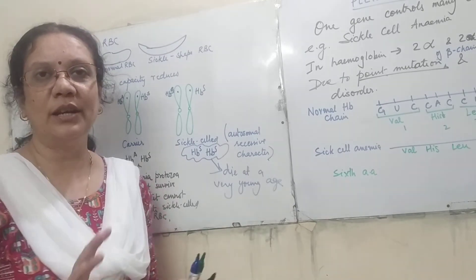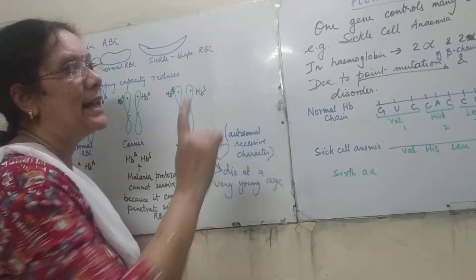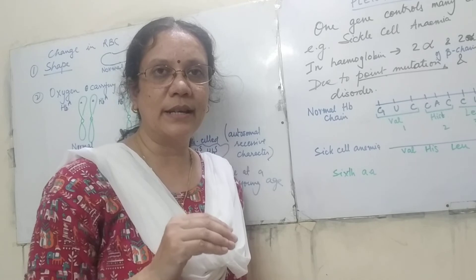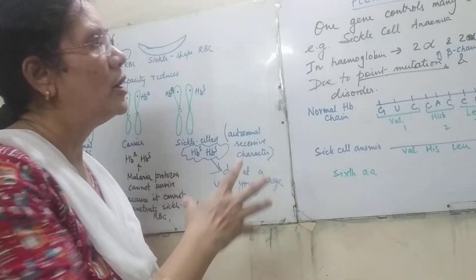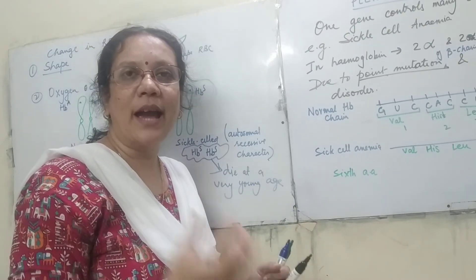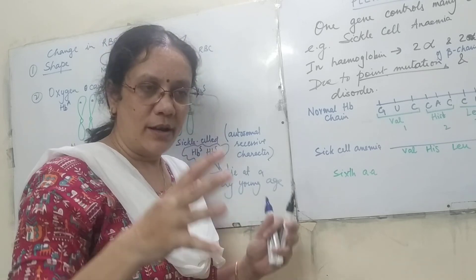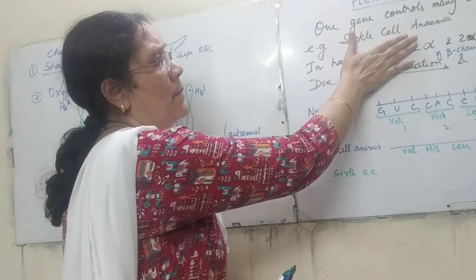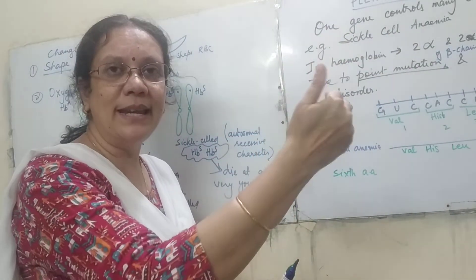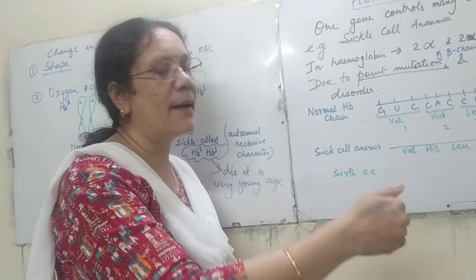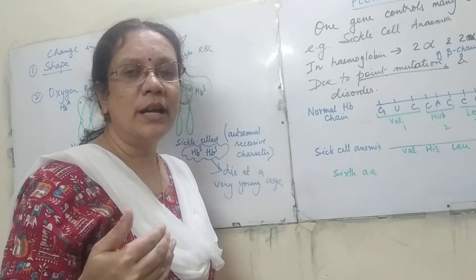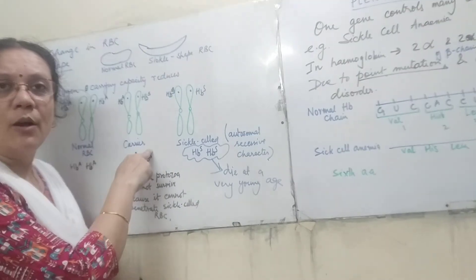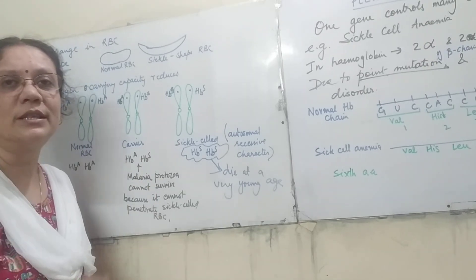Sickle cell anemia is an important example of a pleiotropic gene, and it also appears in practicals and viva. They often give a pedigree chart and ask you to identify it. If it is an autosomal recessive pedigree chart, you mention sickle cell anemia, then answer sub-questions on why it happens, what the symptoms are, and what the advantages are — for example, that a person with one mutated allele will not suffer from malaria.